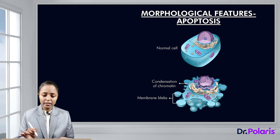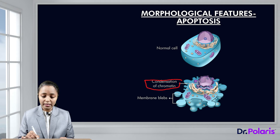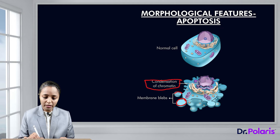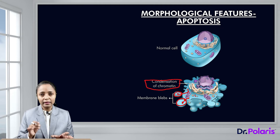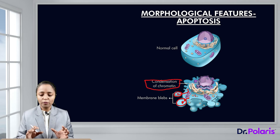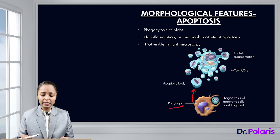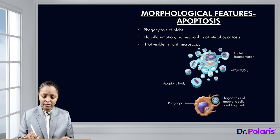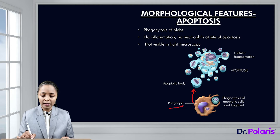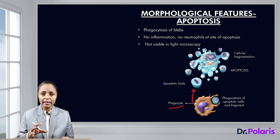Diagrammatically, we can see the normal cell undergoing apoptosis: condensation of chromatin occurs, DNA particle breakdown occurs, small cytoplasmic blebs form, and these contents breaking down enter the blebs which get separated from — or fall off — the main cell. As they fall off, phagocytes are recruited to the site of apoptosis, identify them, and ingest them. There is no visible sign of apoptosis under light microscopy.